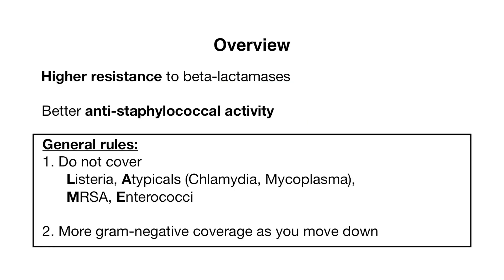Let's go over some basics. In our first video we discussed beta-lactamases, which are enzymes produced by bacteria allowing them to be resistant to certain beta-lactam antibiotics. Compared to penicillins, cephalosporins have a higher resistance to beta-lactamases overall, rendering them more effective. They also have better anti-staphylococcal activity. Keep in mind these general rules: cephalosporins do not cover listeria, atypicals like chlamydia and mycoplasma, MRSA, and enterococci — and you can remember these organisms with the acronym LAME.